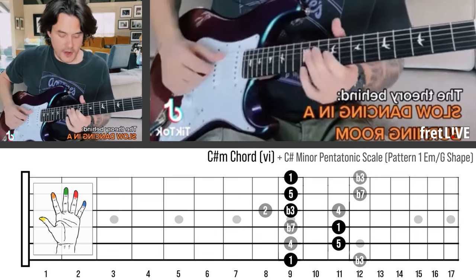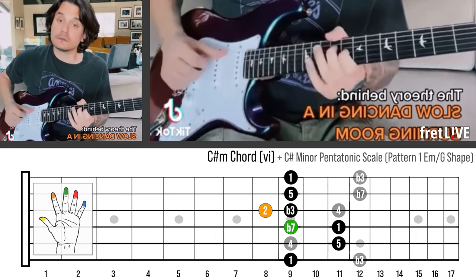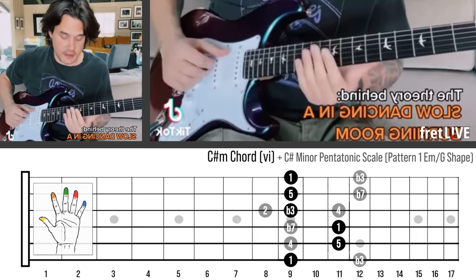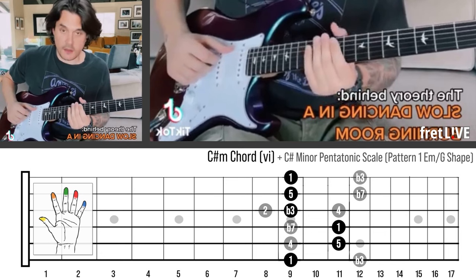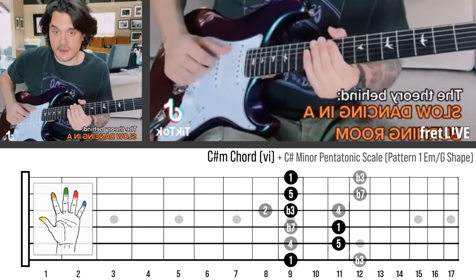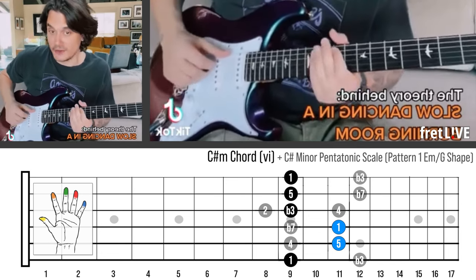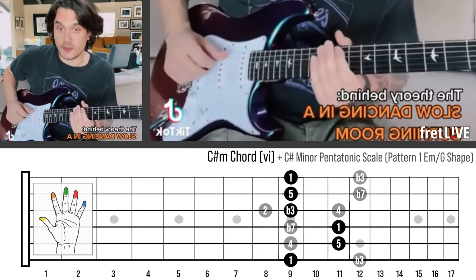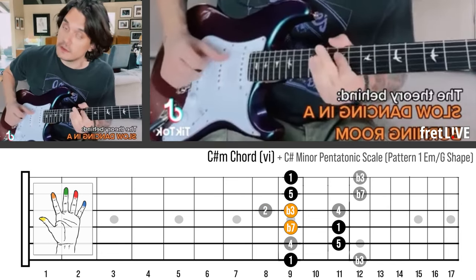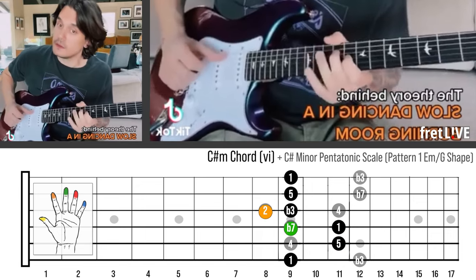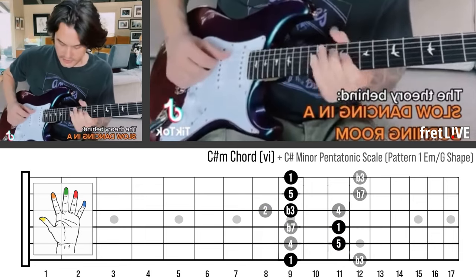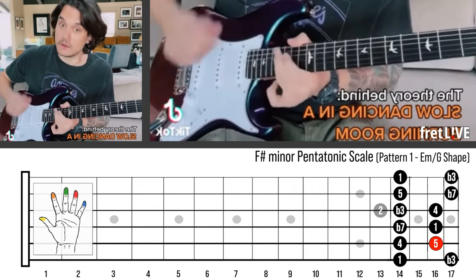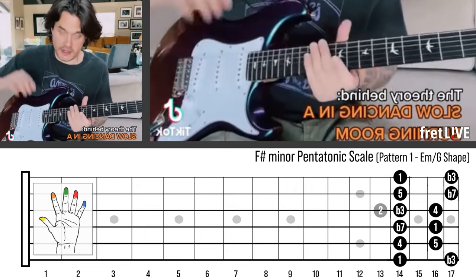So the next part - that's still just double stops in C-sharp minor pentatonic, except I'm adding a little. Otherwise it'd just be that. That's also like Vultures, but we'll get to that some other day.